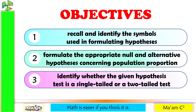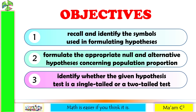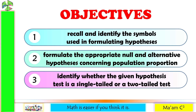Our objectives in this lesson are the following: recall and identify the symbols used in formulating hypothesis; formulate the appropriate null and alternative hypothesis concerning population proportion; and identify whether the given hypothesis test is a single-tailed or a two-tailed test.